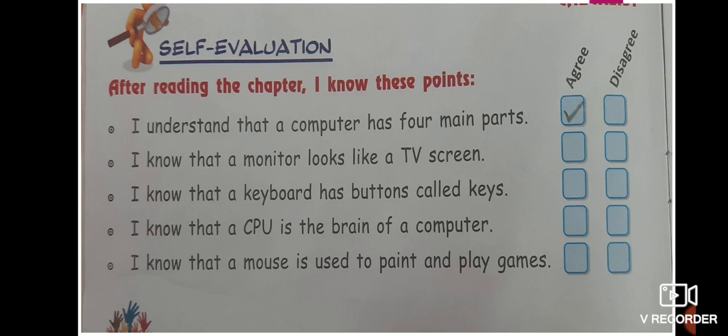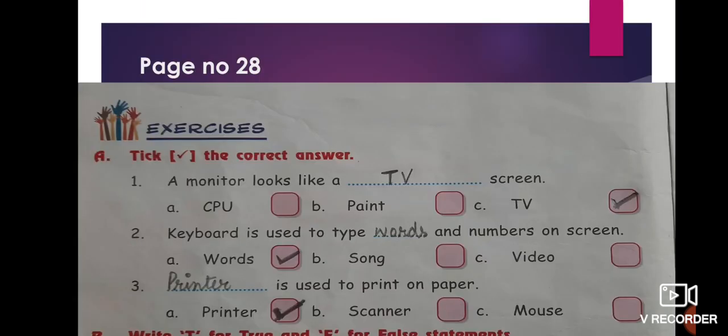The first statement is: 'I understand that a computer has four main parts.' I agree with this — yes, a computer has four main parts — so I have ticked the box under Agree. In the same way, you have to read all the points and complete this on your own.